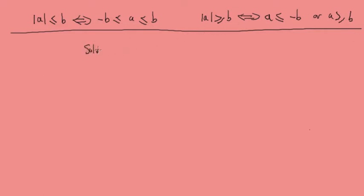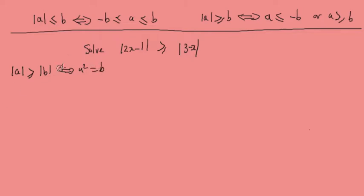Now let's look at a second example. We're going to solve the modulus of 2x minus 1 greater than or equal to the modulus of 3 minus x. For the algebraic method, we use the property that the modulus of a is greater than or equal to the modulus of b is equivalent to a squared is greater than or equal to b squared. So we square both sides: (2x minus 1) squared is greater than or equal to (3 minus x) squared.